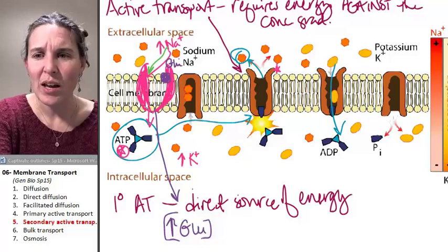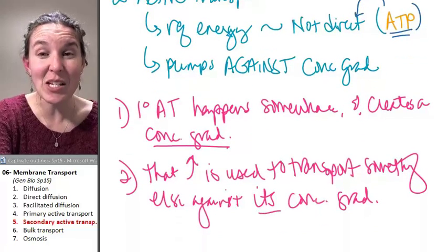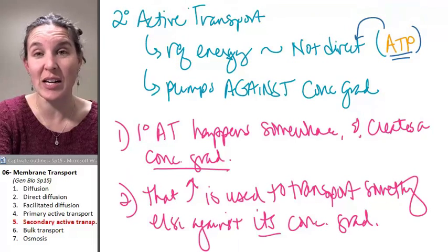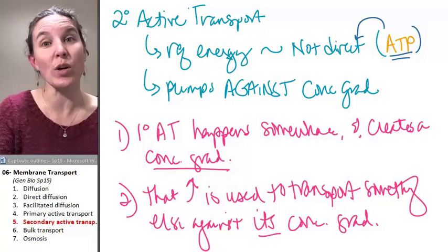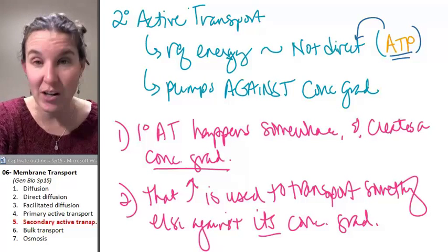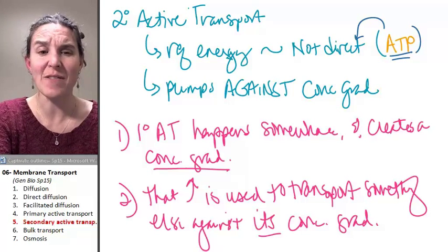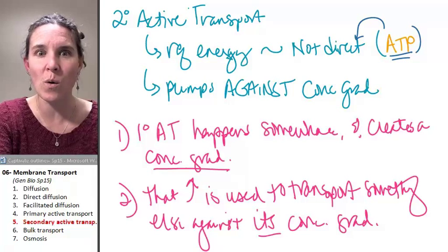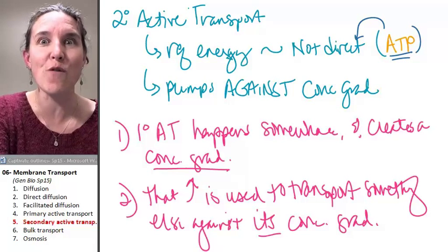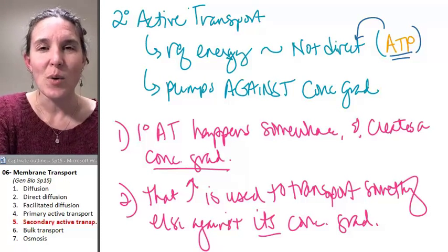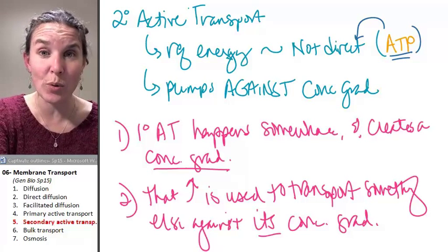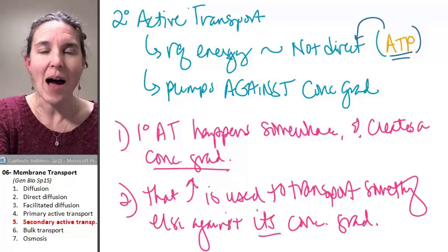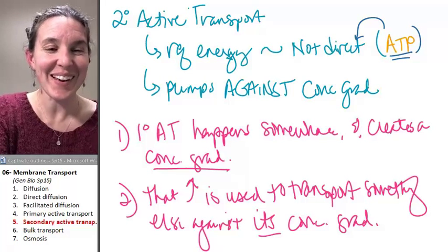You have to be using ATP to establish the concentration gradient in the first place. And then you have to let that molecule carry someone else against their concentration gradient. We can pretend like we're cells in a room going in and out. I bet we'll do that in class.